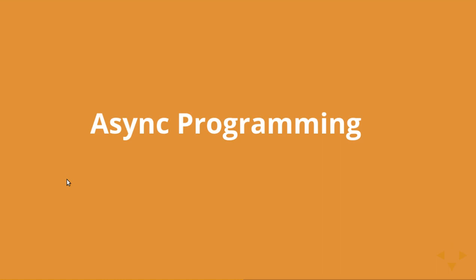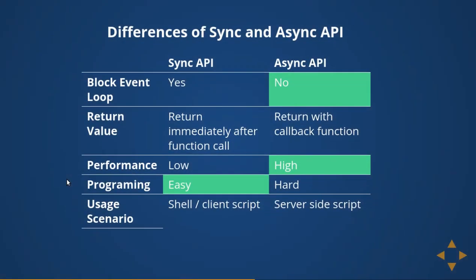Let's try to understand promises for Node.js — how the event loop is solving the issue and in what different ways we can implement promises. The difference between sync and async API: the event loop is async. Sync API returns a value immediately after the function call, like doing addition operations, passing arguments and returning data immediately after execution.